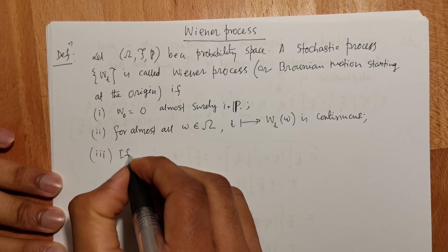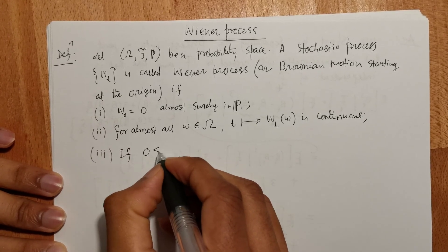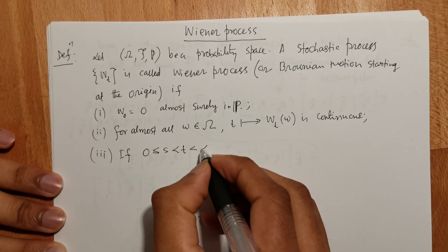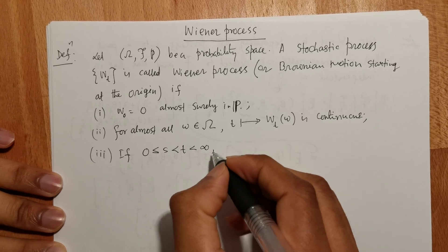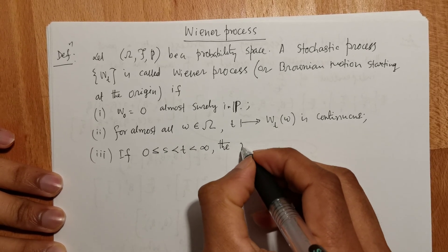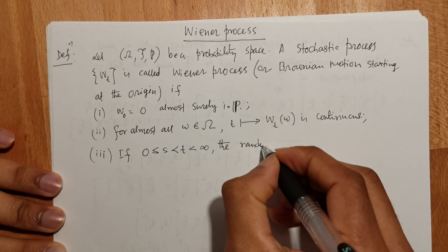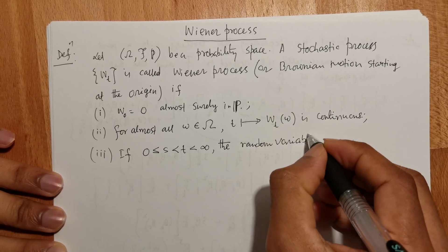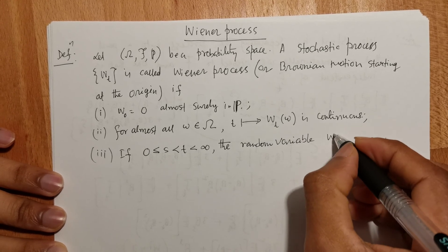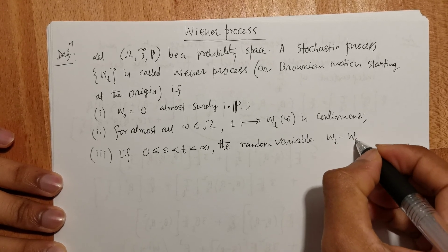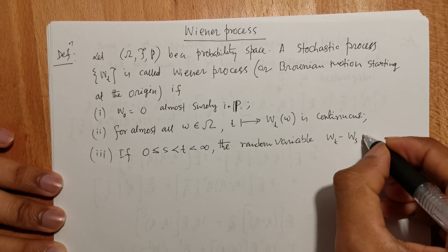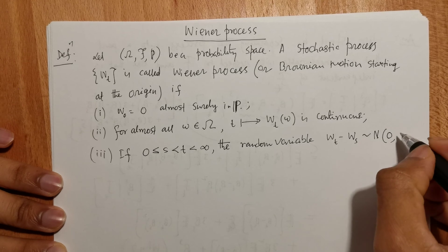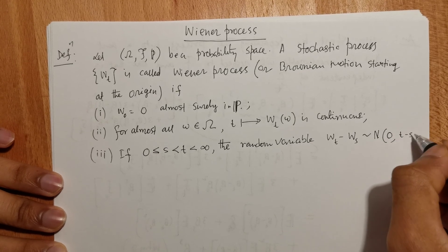The third condition: if 0 ≤ s < t < ∞, then the random variable Wt minus Ws is normally distributed with mean 0 and variance t minus s.